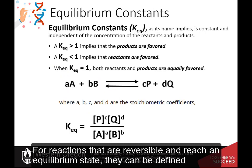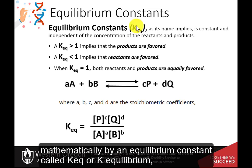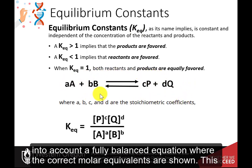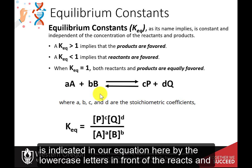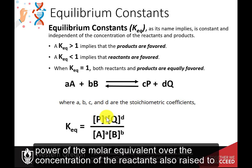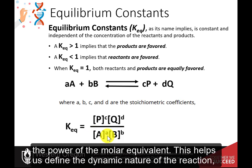For reactions that are reversible and reach an equilibrium state, they can be defined mathematically by an equilibrium constant called K-EQ, or K-Equilibrium, due to the stability and nature of the equilibrium state. We need to take into account a fully balanced equation where the correct molar equivalents are shown. We can define K-EQ as the concentration of the products raised to the power of the molar equivalent over the concentration of the reactants, also raised to the power of the molar equivalent.